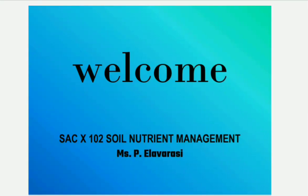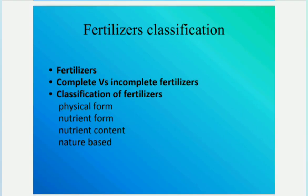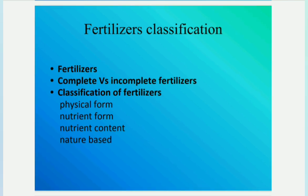Good afternoon. Today we learn about fertilizer classification. These are used to provide some nutrients which are not frequently supplied by soil. A fertilizer is any material of natural or synthetic origin that is applied to soil or plant tissue to supply one or more plant nutrients which are essential for crop growth.